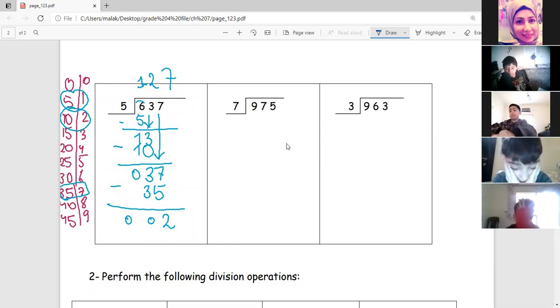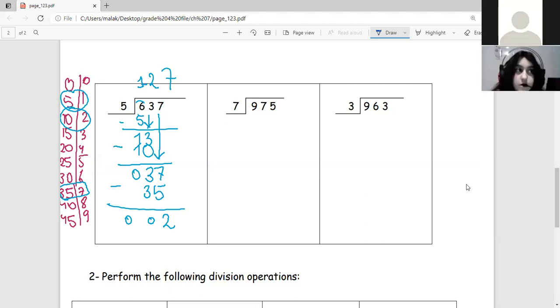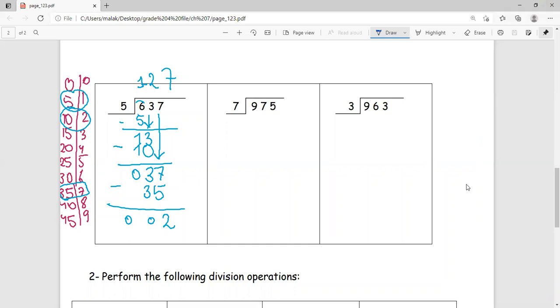Yes, most of all with division. Yes, please unmute and share with us how do we divide 975 by seven? Yeah, first step, let's write table seven. Yes, tell me table seven please.